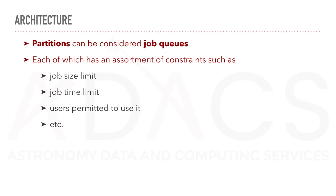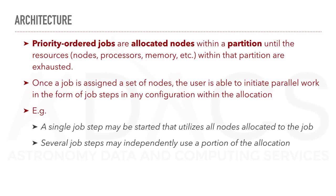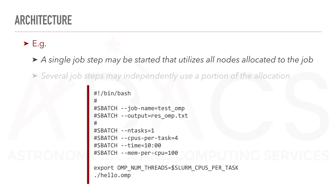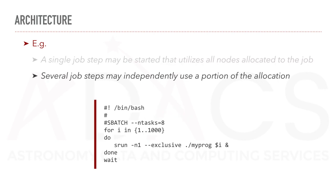Partitions can be considered job queues, each of which has an assortment of constraints such as job size limit, job time limit, users permitted to use it, and so on. Priority ordered jobs are allocated nodes within a partition, until the resources — such as the node, the processors, or memory — within that partition are exhausted. Once a job is assigned a set of nodes, the user is able to initiate parallel work in the form of job steps in any configuration within that allocation. For example, a simple job step may utilize all the nodes allocated to the job, or several job steps may independently use a portion of the allocation.